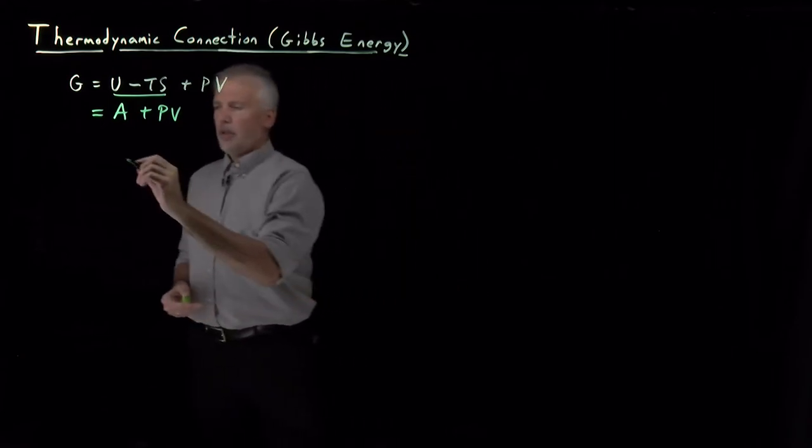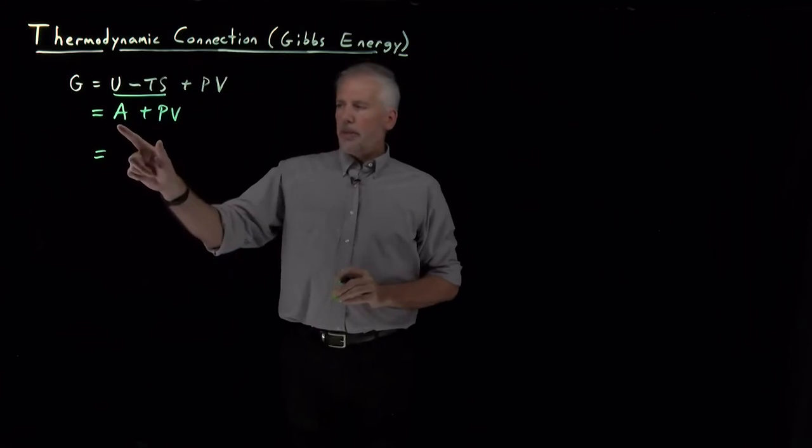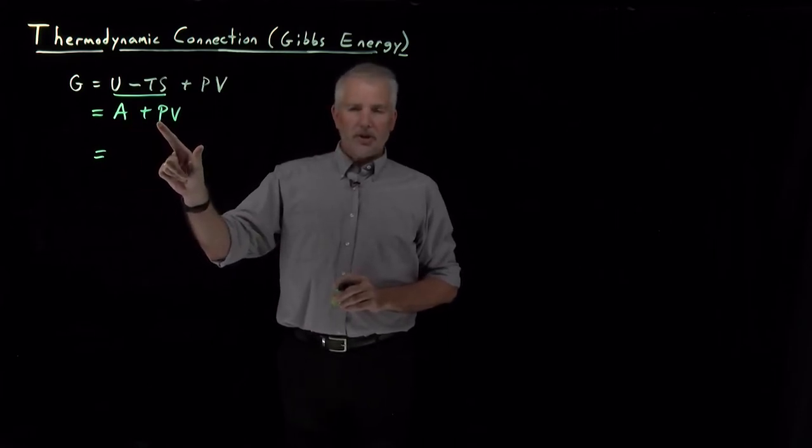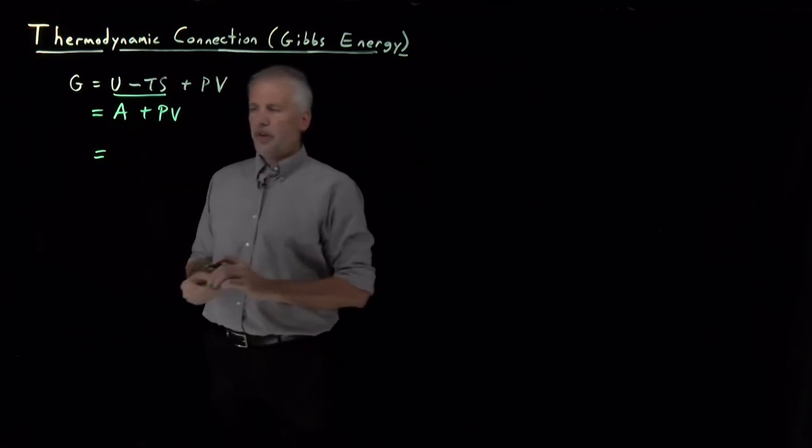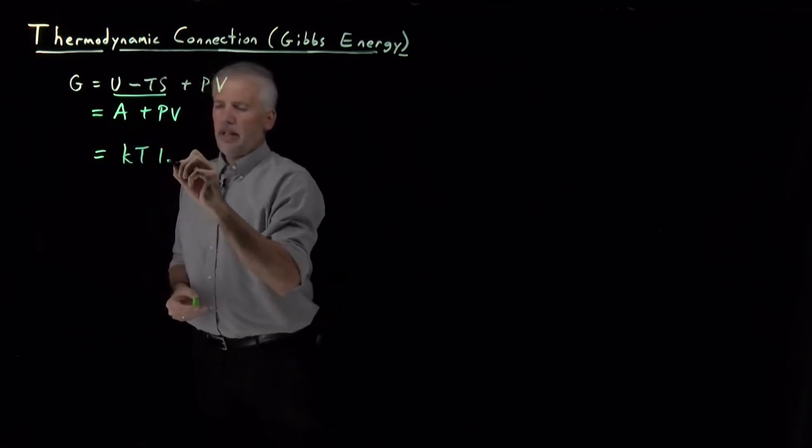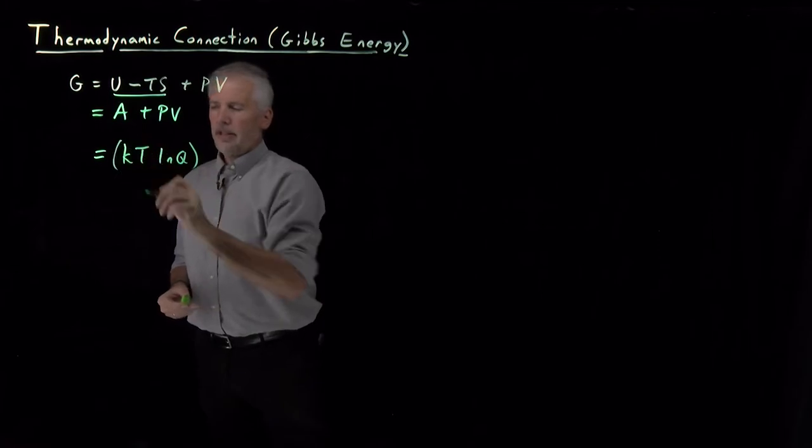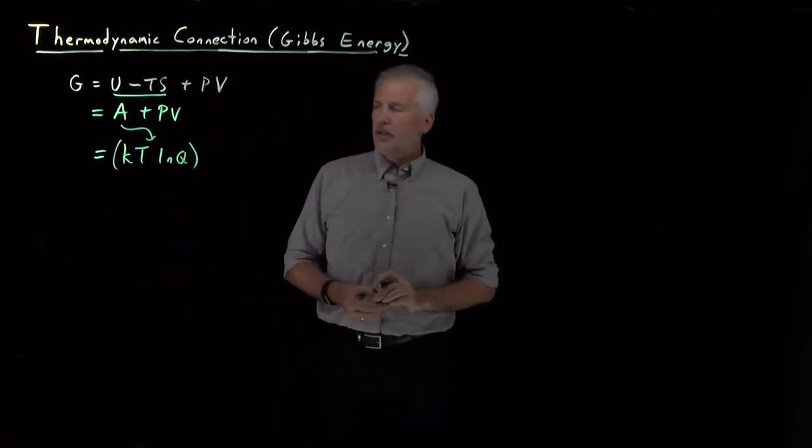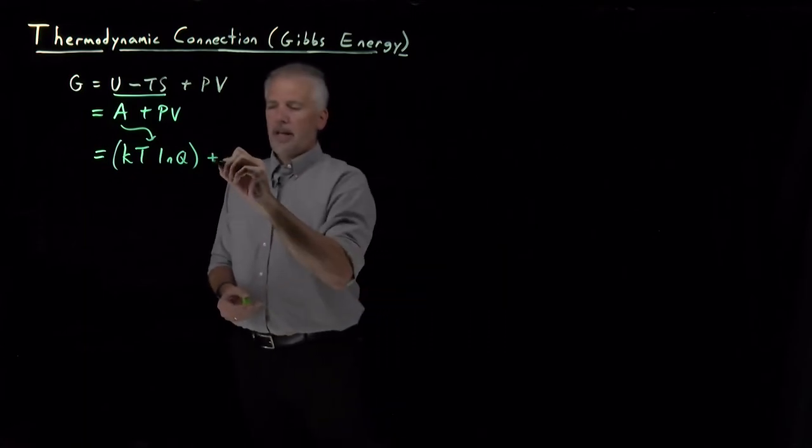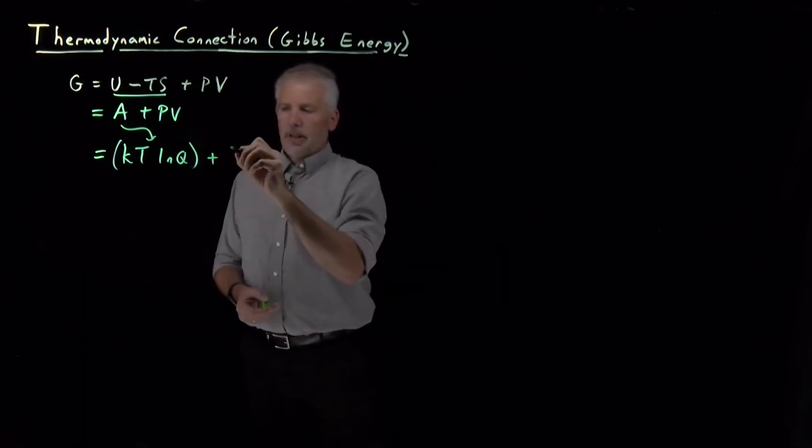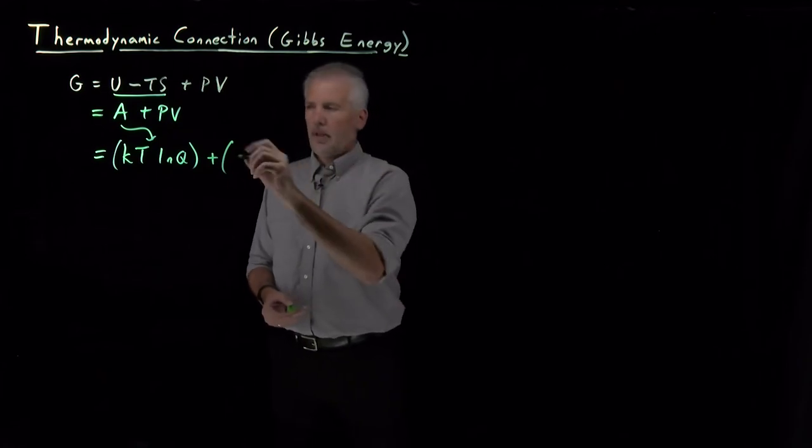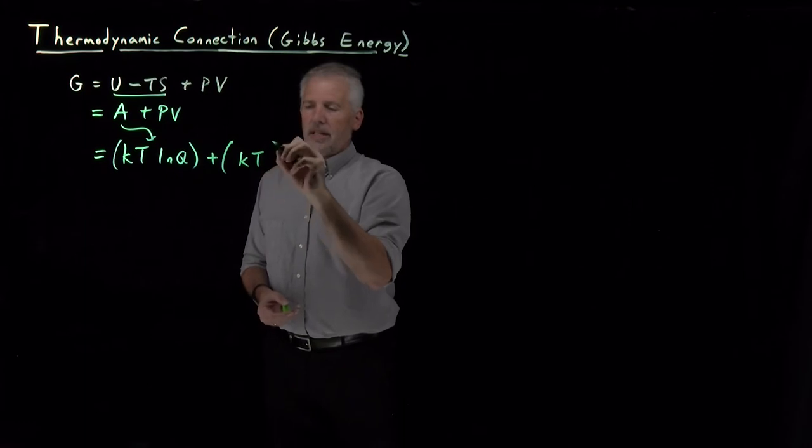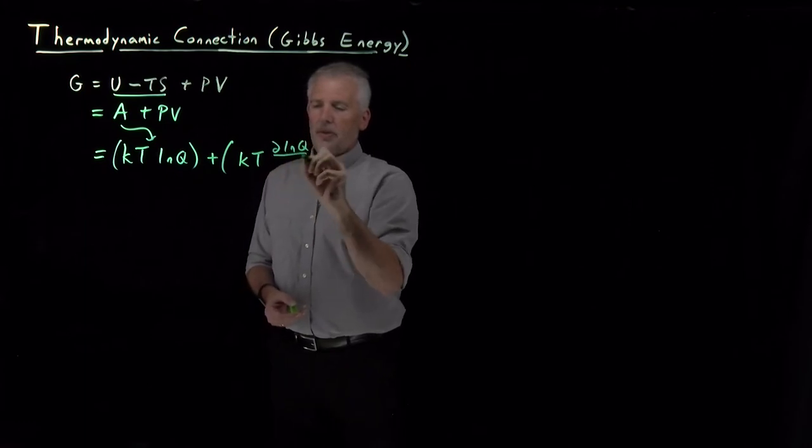Since we know what the thermodynamic connection formulas are for the Helmholtz energy and we also have one for the pressure, we can say that the Gibbs free energy is KT log Q. That's the thermodynamic connection formula for the Helmholtz free energy. We can add to that volume times the thermodynamic connection formula for the pressure, which was KT d log Q dV.